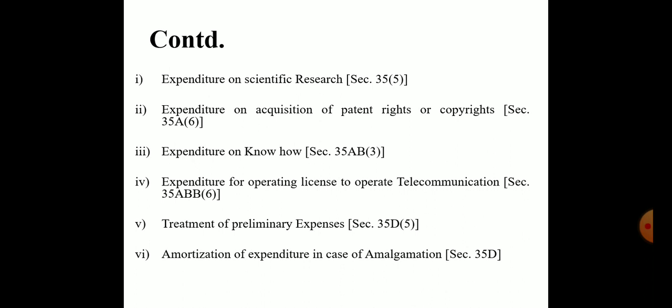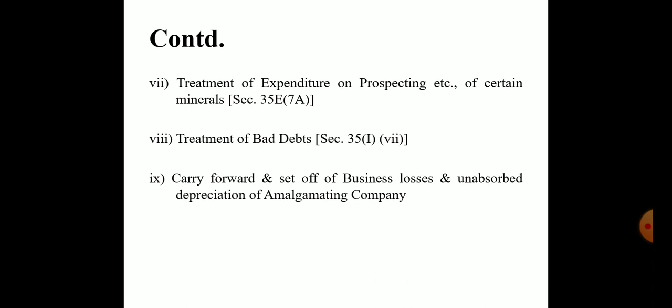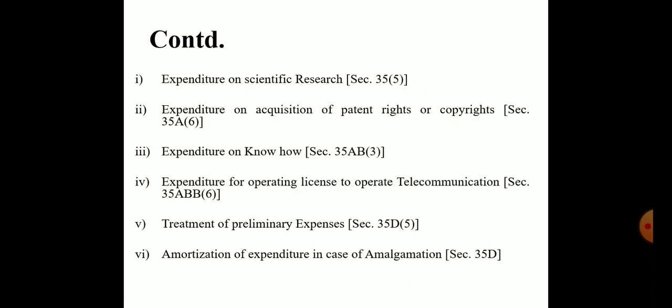Sixth, amortization of expenditure in case of amalgamation under Section 35D: where an assessee becoming an Indian company incurs any expenditure wholly or exclusively for the purpose of amalgamation or demerger of an undertaking, the assessee shall be allowed a deduction of an amount equal to one-fifth of such expenditure for each of five successive previous years beginning with the previous year in which the amalgamation or demerger takes place.